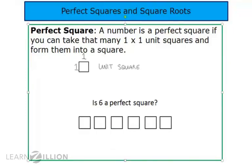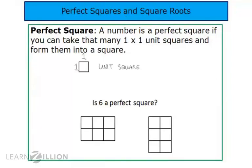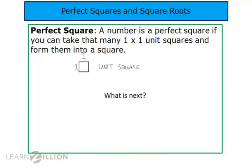Let's try another. Is six a perfect square? No matter how hard I tried, I could not get six unit squares to form a square. I was able to get two different types of rectangles — in fact, probably four different types, because I could do a six-by-one and a one-by-six — but I could not get six unit squares to form a square. Therefore, six is not a perfect square. Again, it will have a square root, but its square root will be a decimal number. What do you think the next perfect square is?